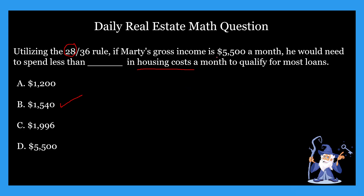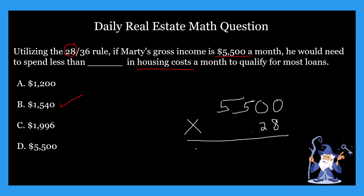So we're going to take our gross income of $5,500 and multiply that by 0.28. $5,500 multiplied by 0.28 gives us $1,540 — and that is our answer. When it comes to the math in this problem, there isn't much: it's one simple multiplication problem. The difficult part is dissecting the question and figuring out what it's asking. So the two steps to solving these problems are: first, identifying the type of problem; and second, actually doing the math.